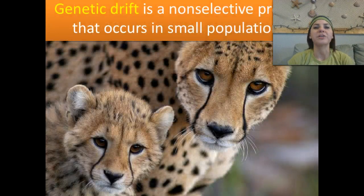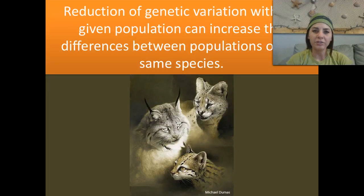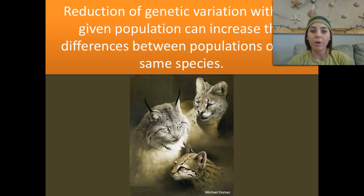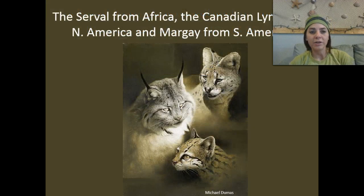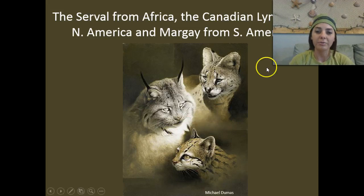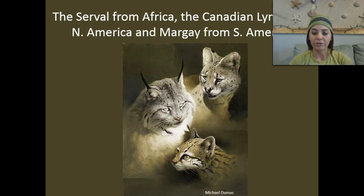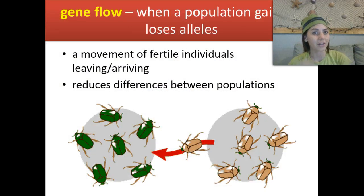Genetic drift, by definition, is a non-selective process that occurs in small populations. Reduction of genetic variation within a given population can increase the differences between populations of the same species. The serval from Africa, the Canadian lynx from North America, and the margay from South America are all the same species, but they all have very different outside appearance or phenotypic characteristics, and that's due to genetic drift.